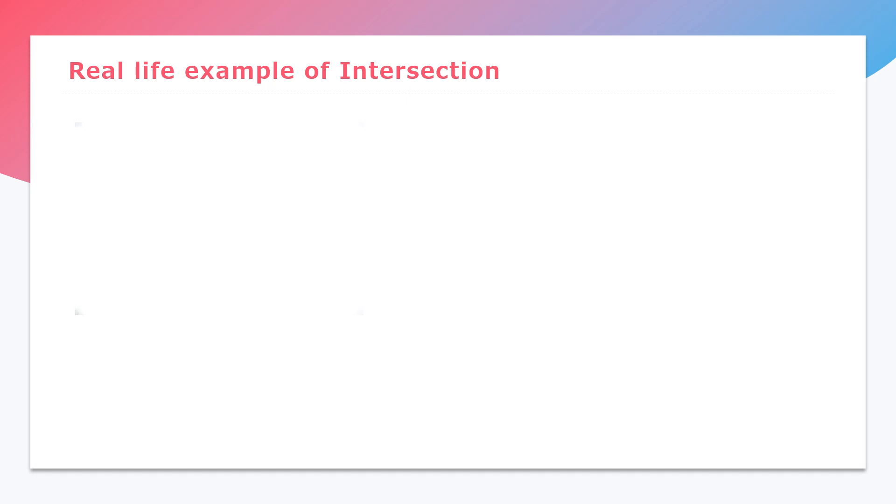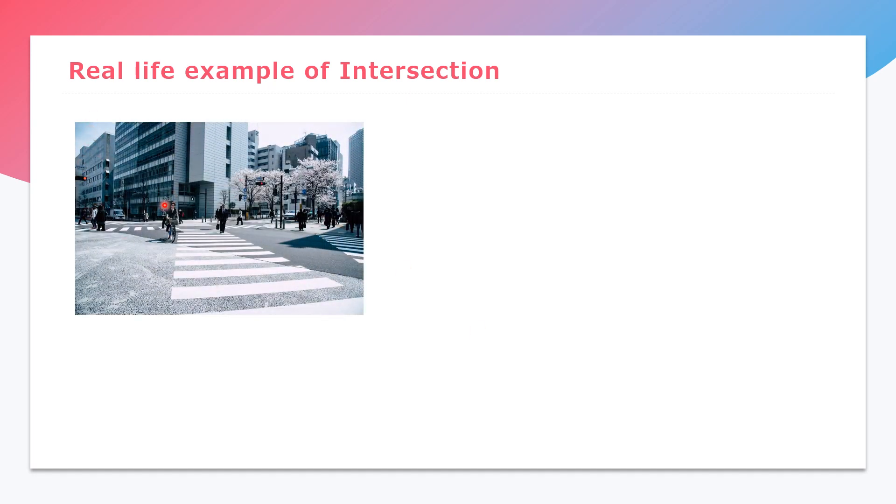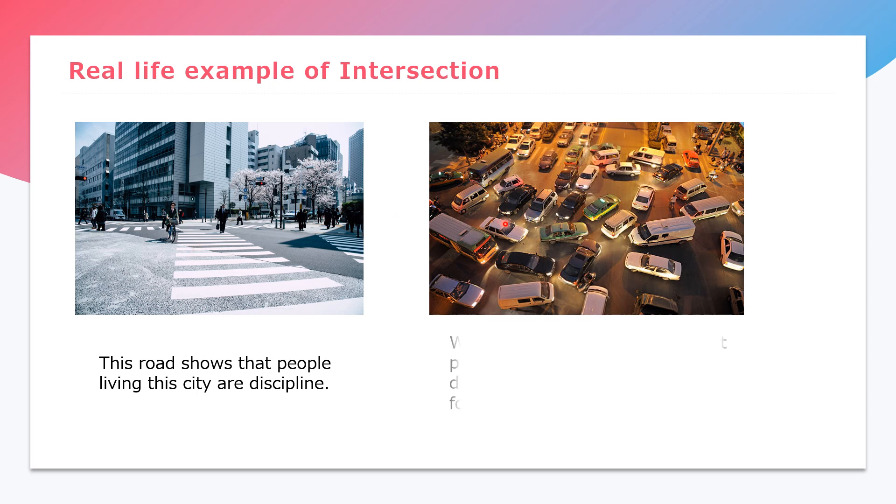We have real-life examples of intersection. We have this street somewhere in Europe. This road shows that people living in the city are disciplined because they just walk on the passenger lanes and everybody has a common direction. But this wildest road, this intersection shows that people don't know the word discipline. Most likely, this can be found in the Philippines. Whether we like it or not, usually in the intersection of Philippine roads like this, especially in EDSA.